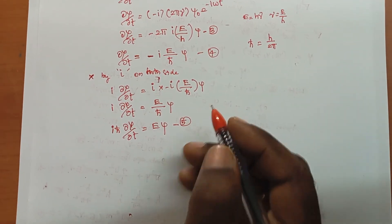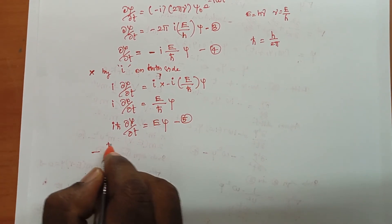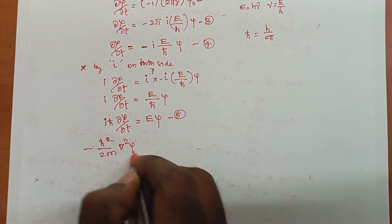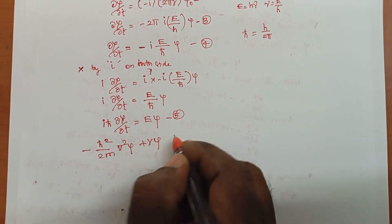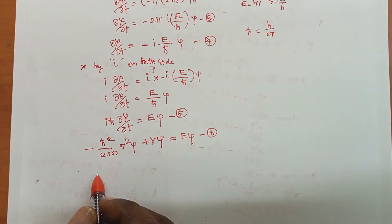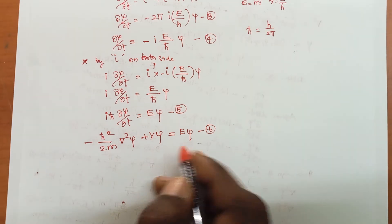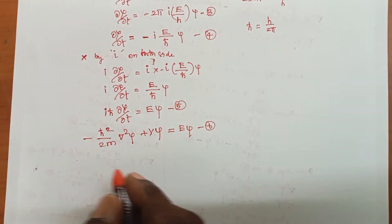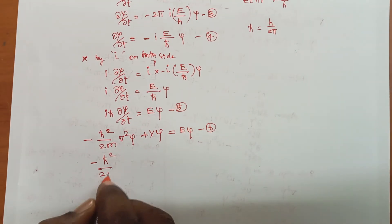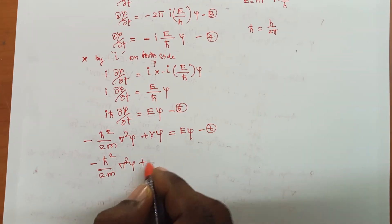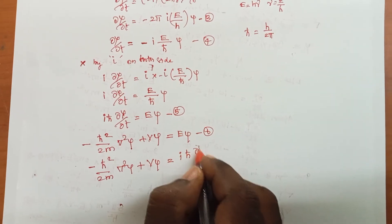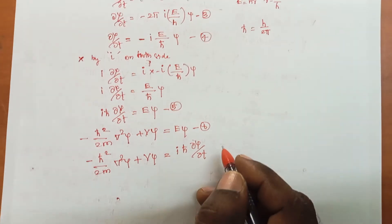The Schrödinger time-independent wave equation is: minus ℏ²/2m · ∇²ψ plus Vψ equals Eψ. This is equation 6. Substituting equation 5 into equation 6, we get: minus ℏ²/2m · ∇²ψ plus Vψ equals iℏ · ∂ψ/∂t. This is equation number 7, the Schrödinger time-dependent wave equation.